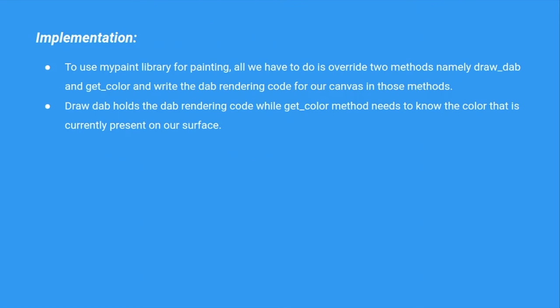Coming to the implementation — to use libmypaint to render a stroke over our canvas, all we have to do is implement the drawDab and getColor methods. We just need to overwrite these and write the code concerning our own canvas object classes. drawDab is responsible for rendering the dabs over the canvas, whereas getColor is used by libmypaint to see the color currently present on the canvas.